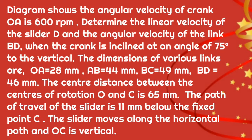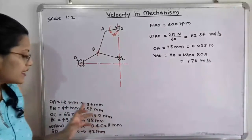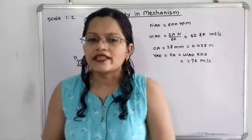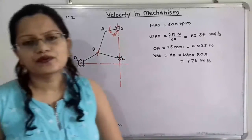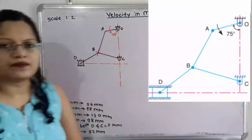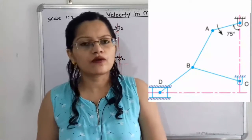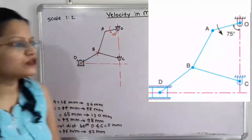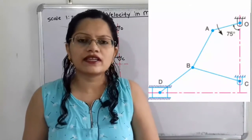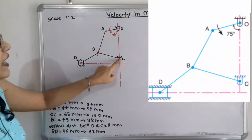Now we will draw the space diagram with some suitable scale. If we observe the dimensions of the given links, the largest is 65 mm — the vertical distance between fixed points O and C. So we will use scale 1 is to 2, meaning we multiply all dimensions by 2. We have to draw a dash-dot line through the center. Taking O as the fixed point at top, we go 65 × 2 = 130 mm, that is 13 cm, downward to select point C.